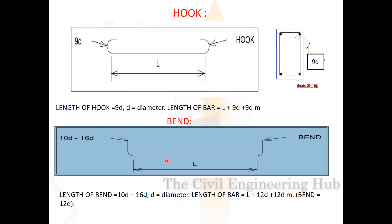The length of the bend equals 2d (bend deduction), and the length of the bar with bend = length + 2d, where d is the diameter. The bend is 2 dia.